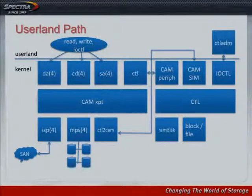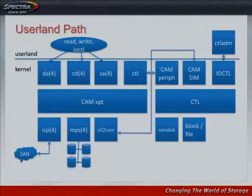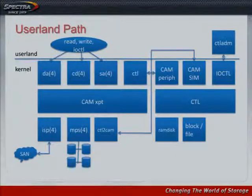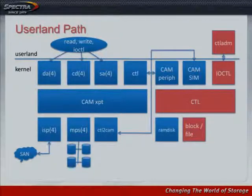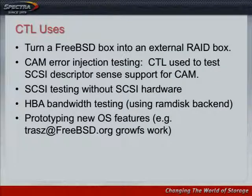For the user land path, ctl_adm talks to CTL via an ioctl front-end port. ctl_adm is the primary configuration utility for CTL; there's also a statistics program called ctl_stat. ctl_adm is the primary way you configure LUNs and has a whole bunch of different functions. You start in ctl_adm, go through the ioctl front-end port, then into command decoding, and for a read or write it goes into the block-and-file back-end.